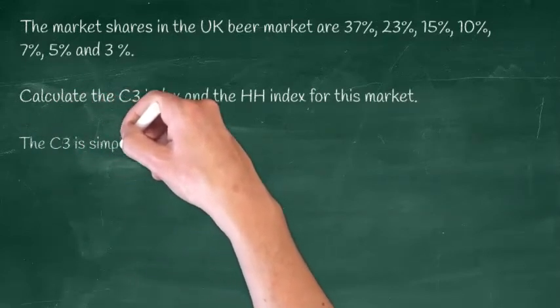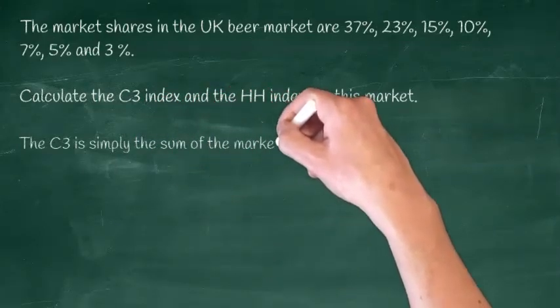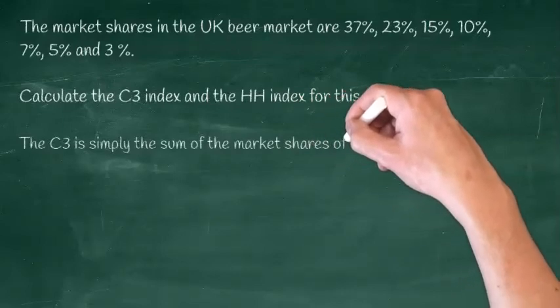OK, for the C3, you need this time to add up the market share of the top three firms in the industry. Here we get 75%.